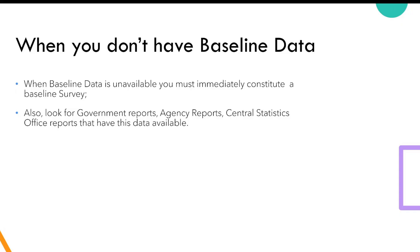Another way to sort out this problem is to look at old reports — government-generated reports, agency reports, central statistics office reports. Poverty is a big dimension, and as a nation, people are monitoring this. So you could be able to get findings on what the poverty levels were at the baseline year.